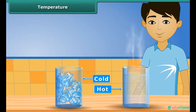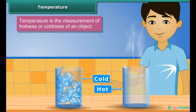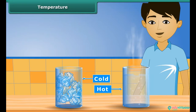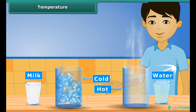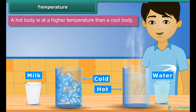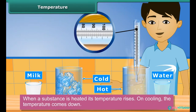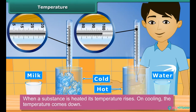Now we will learn the concept of temperature. Temperature is the measurement of hotness or coldness of an object. We say that water from the fridge is cold and milk is hot, but how much cold is the water — is it cooler than ice? How much hot is the milk — is it hotter than boiling water? For this, we need a measure. A hot body is at a higher temperature than a cool body. When a substance is heated, its temperature rises; on cooling, the temperature comes down. The degree of hotness or coldness in a body is described as its temperature.